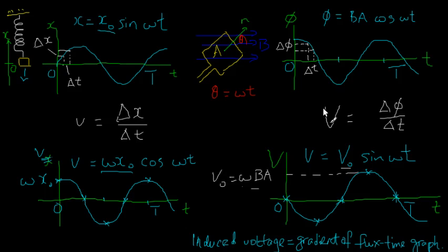And I've also mentioned that we can determine the maximum voltage simply by multiplying the angular velocity by the maximum flux, B times A.